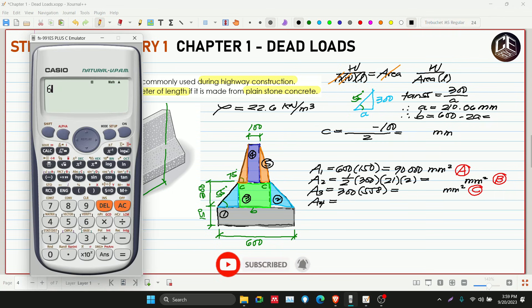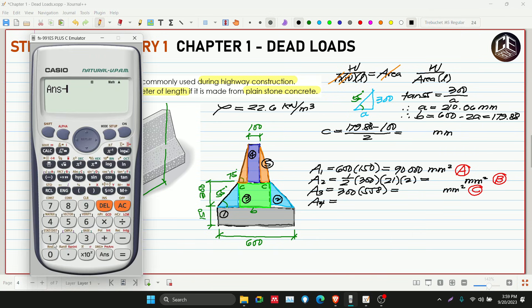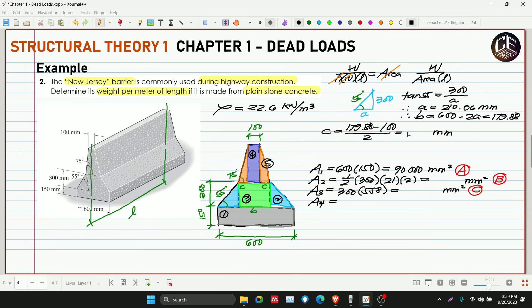Ang ating small b is 600 minus 2 multiplied by 210.06. So 179.88. Then yung ating C is yung B na 179.88 minus 100 then divided by 2. 39.94. Kaya nakapagtaka ako. Sa drawing kasi, kahit paano skilled to it. Kaya nakapagtaka na ba't parang mas malaki yung C kesa dun sa A.